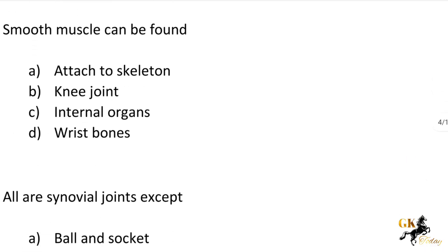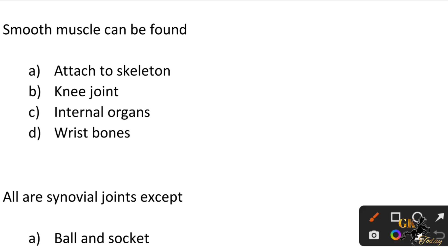Next question: Smooth muscles can be found — Option A: Attached to skeleton. Option B: Knee joint. Option C: Internal organs. Option D: Wrist bones. Smooth muscles can be found on internal organs.